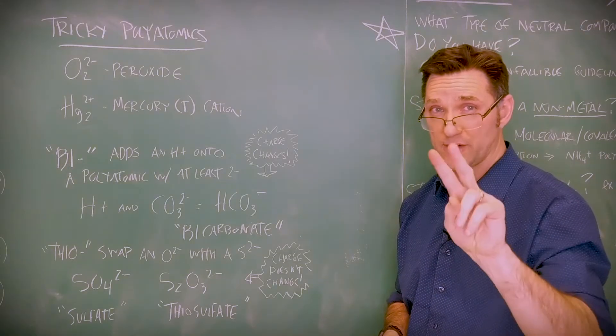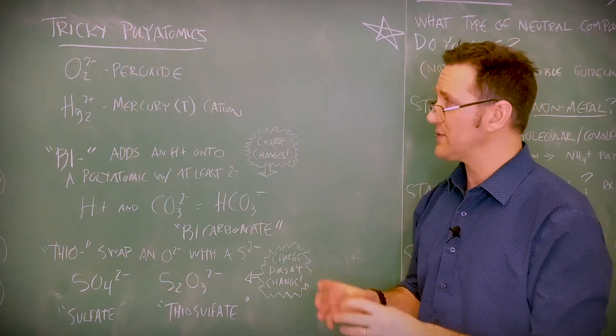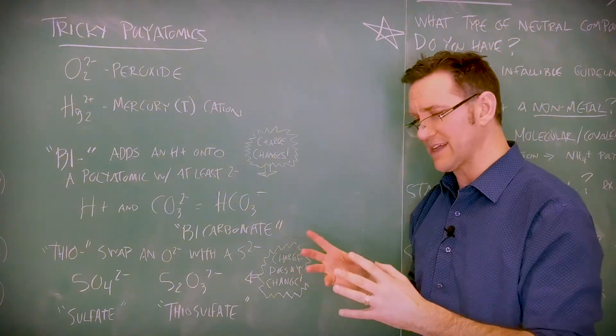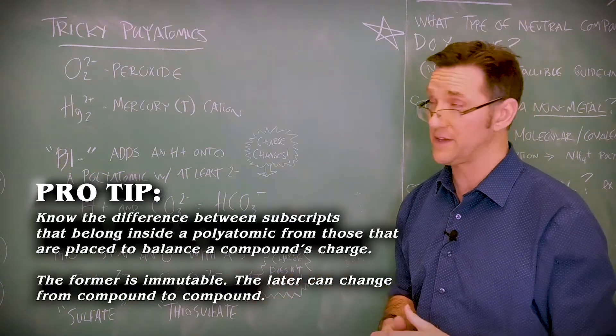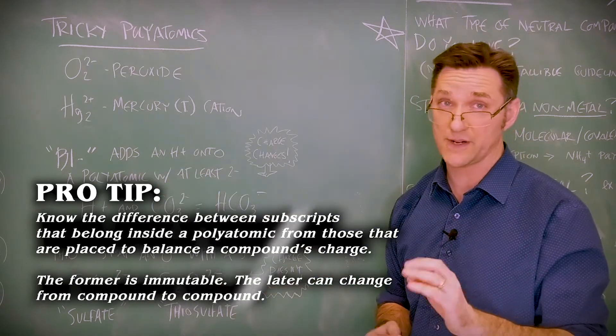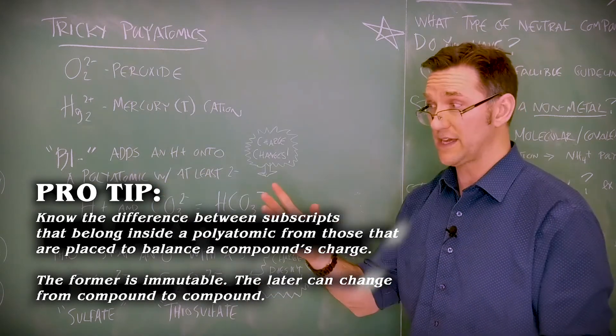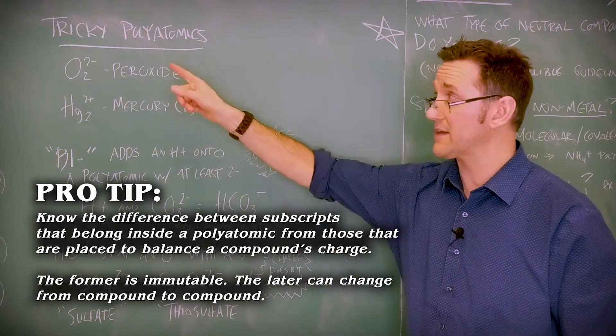There are some tricky polyatomics. First, the two ninjas, I like to call them, peroxide and mercury one. The reason I call them ninjas is they don't really look like a classic polyatomic. Most polyatomics contain more than one element. These don't. So just like any true polyatomic, these subscripts are stuck. You can't change them, reduce them or cancel them out.